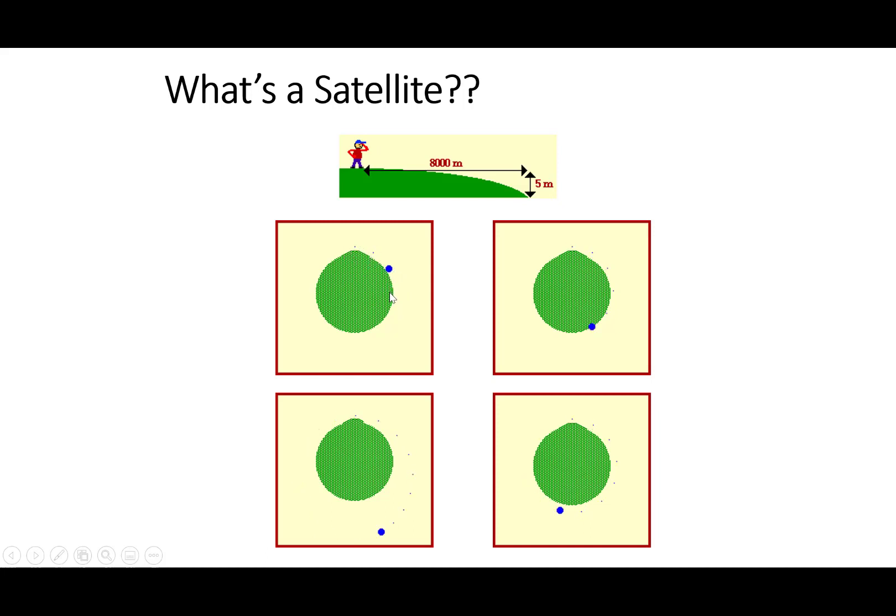Because the Earth is essentially falling away from it. If we throw it even harder, the Earth will curve down away from it more, and it'll go further around the Earth. If we throw it at just the right speed, or even a little bit past the right speed, we can get an orbit.